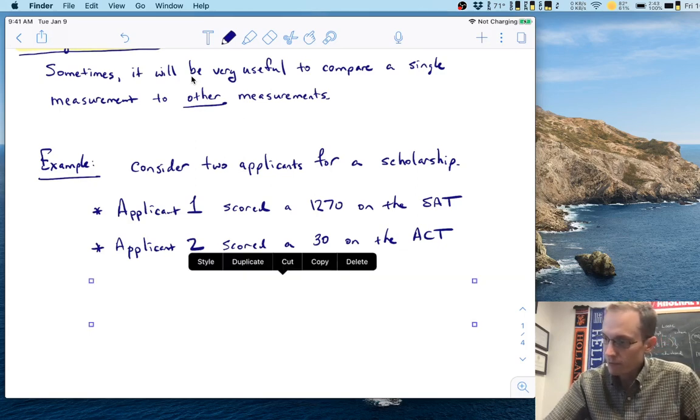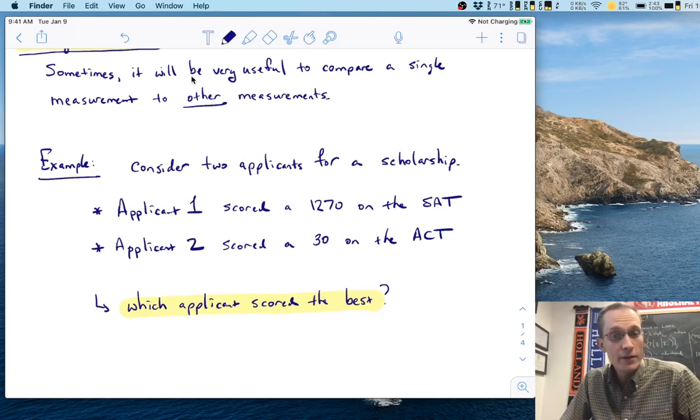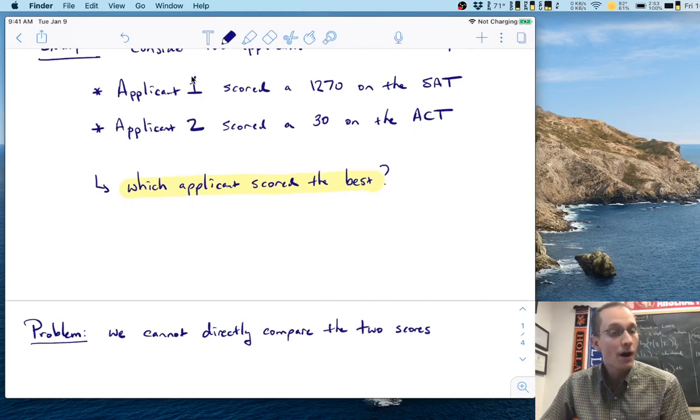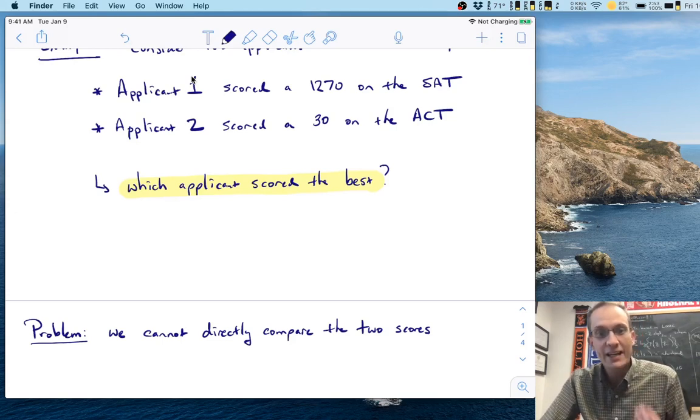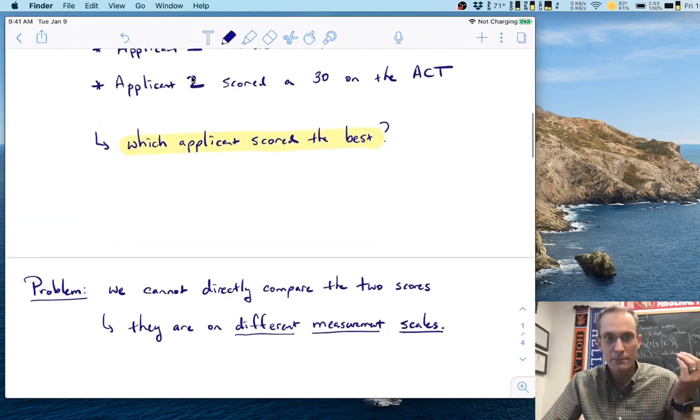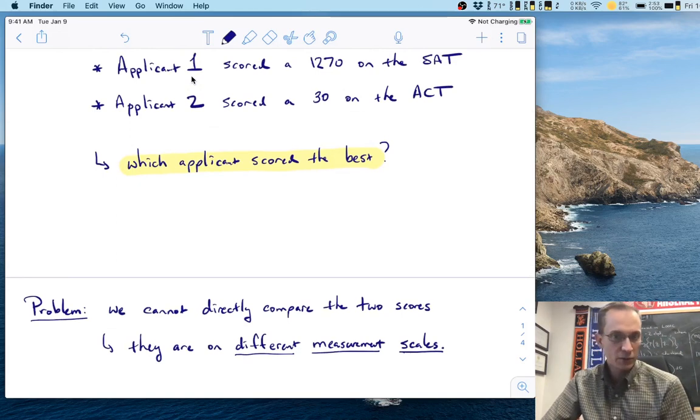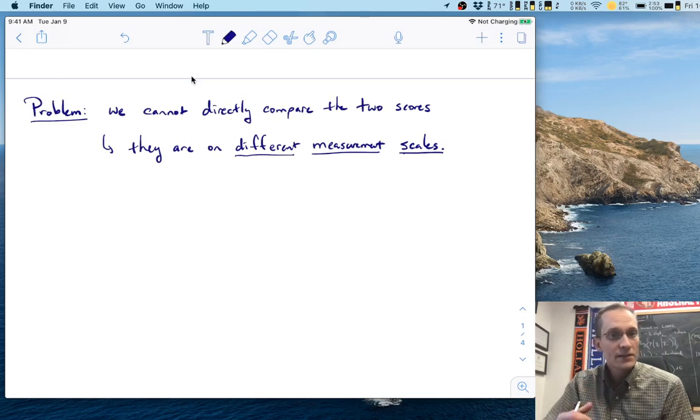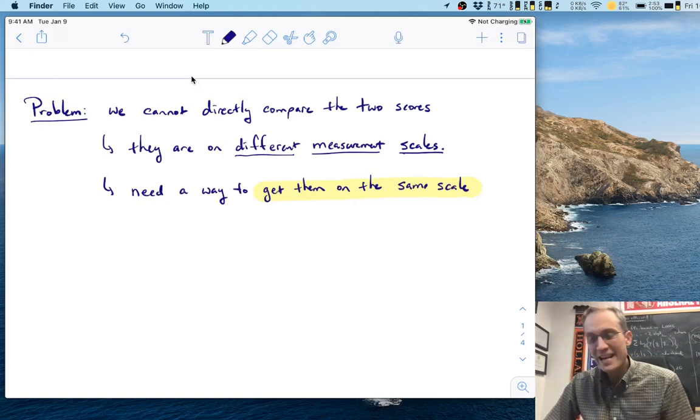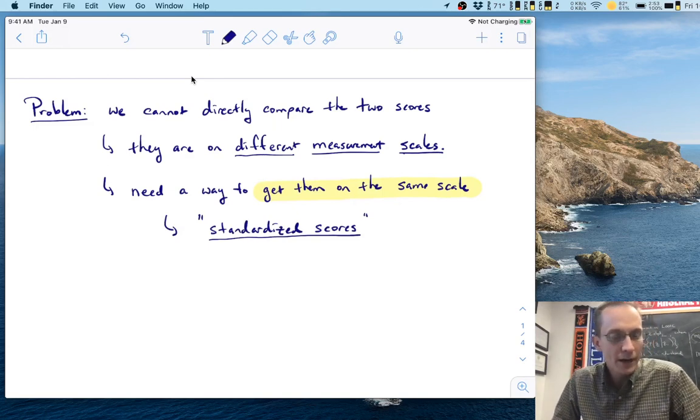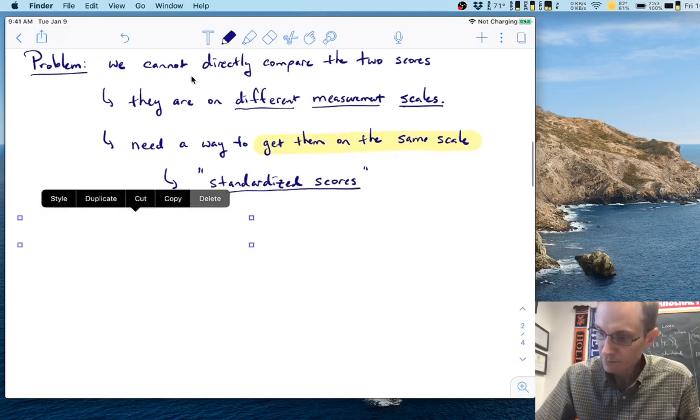The natural question here is which applicant scored the best? Seems like an easy question on its face. But of course, there is a big problem here. Because these two scores are on different underlying scales, we cannot directly compare these two scores. They are simply not comparable with the measurement scales that we're given, the fact that they're different. So of course, this problem is exactly what the solution of standardized scores is developed for. We need a way to get them on the same scale. And to do that, we're going to talk about standardized scores.